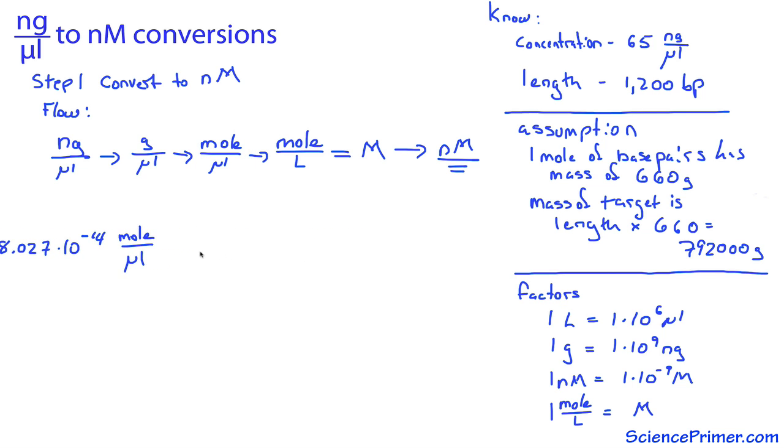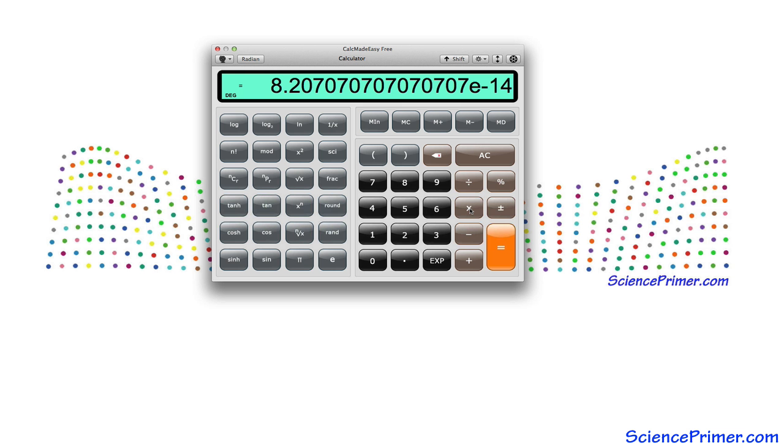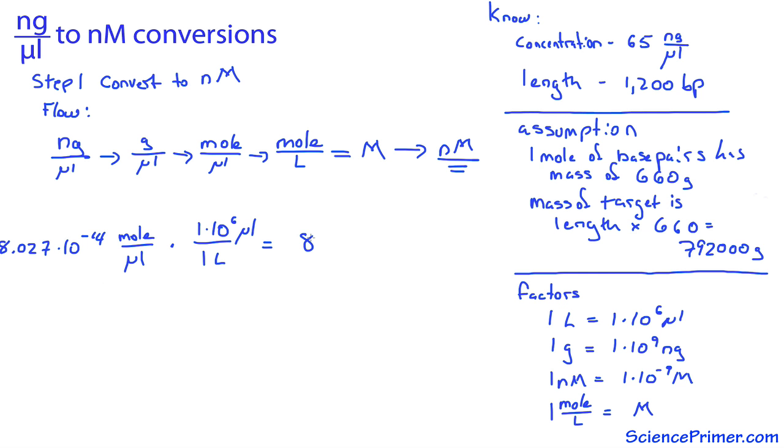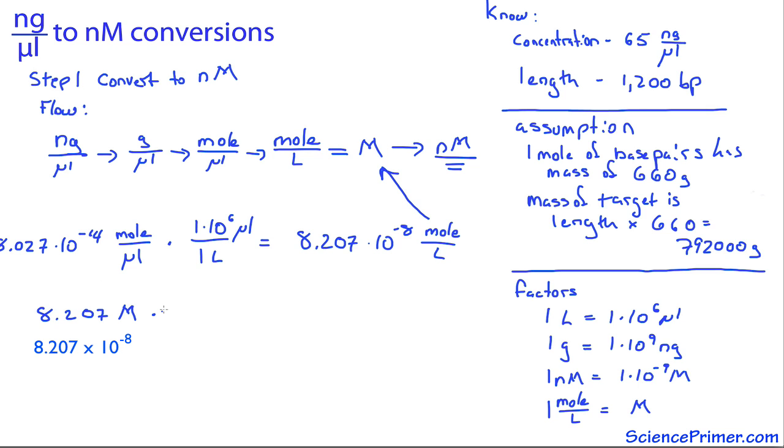Next use liter per microliter conversion factor. 8.207 times 10 to the negative 14 times 1 times 10 to the 6 in scientific notation is 8.207 times 10 to the negative 8. The microliters cancel, leaving moles per liter. Moles per liter is the same as molar, so we can just rewrite this as 8.207 times 10 to the negative 8 molar.